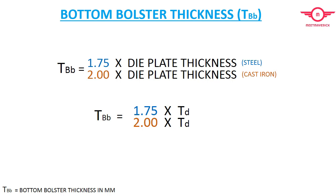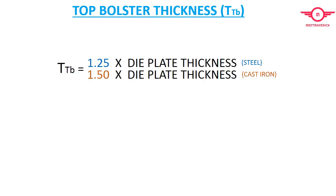Now we need to calculate the thickness of top poster plate, which is denoted as TTB. TTB is 1.25 times Td for steel and 1.50 times Td for cast iron.